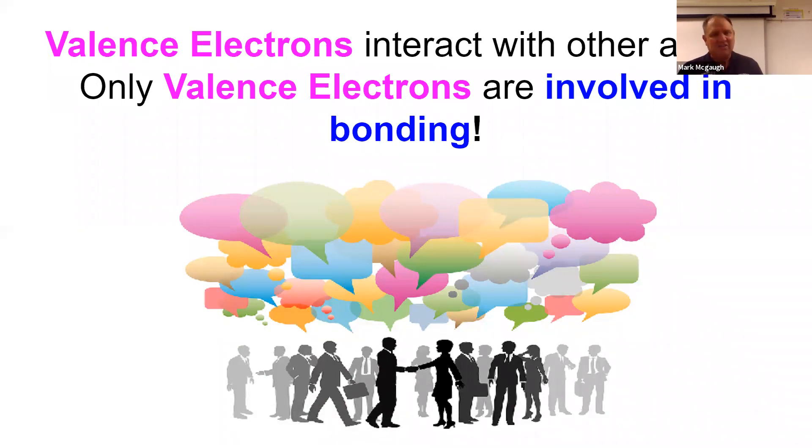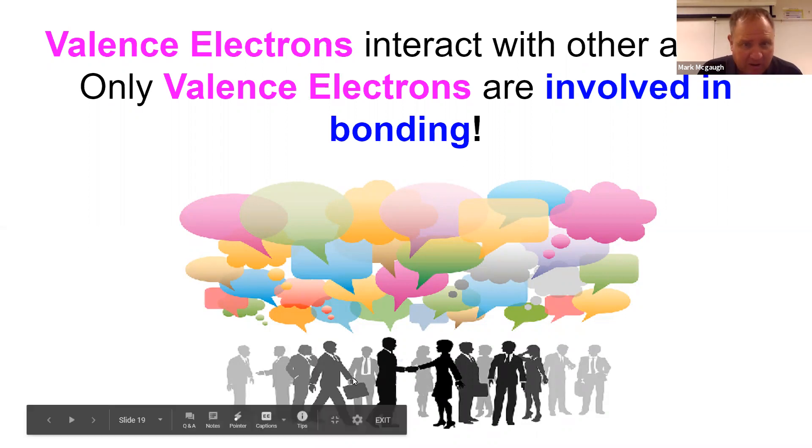It's the valence electrons that interact with other atoms, like these people are interacting with other people, and they're involved in bonding. These people will form friendships, and a friendship is like a bond between two atoms.